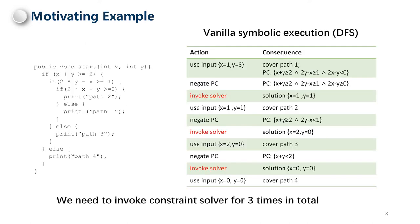Now we use a motivating example to show how our method works. The program contains three branch statements and four paths. Suppose we use symbolic execution to explore the path space. The first input is x equals 1, y equals 3, and the first path is path 1. We collect the path condition here. Suppose we use DFS strategy, so we negate the last constraint and get a new path condition. Then we invoke the constraint solver and get the solution x equals 1, y equals 1. So the next path is path 2. In this way, all the paths will be explored. Finally, we need to invoke the constraint solver three times.